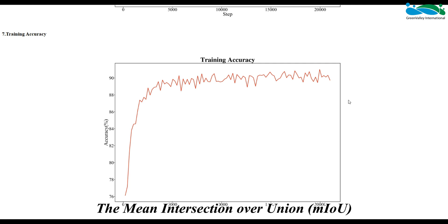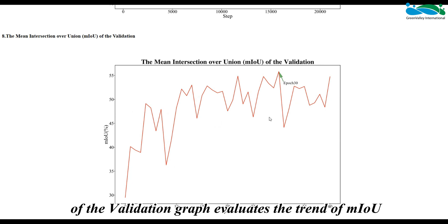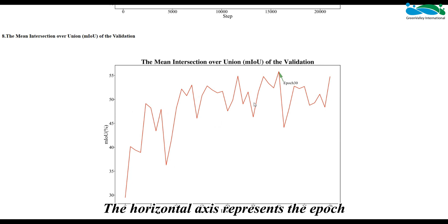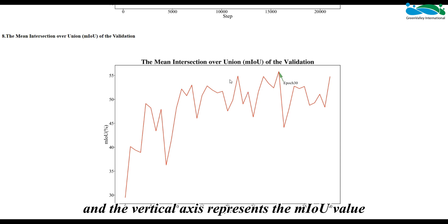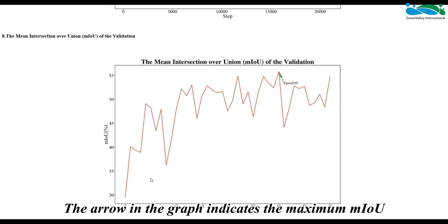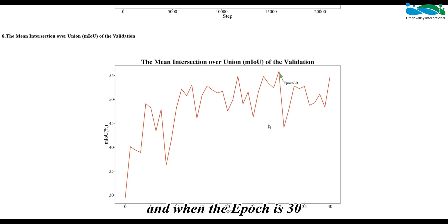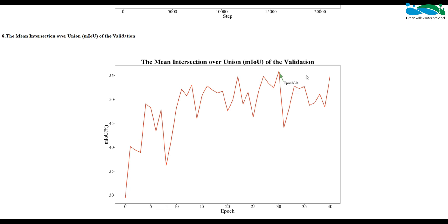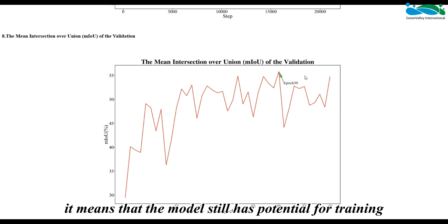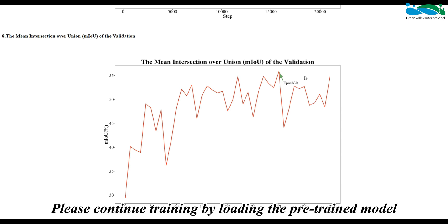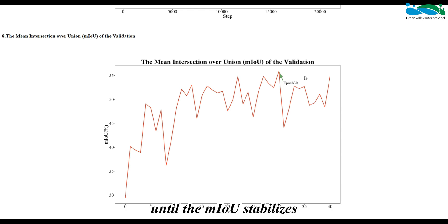The mean Intersection over Union (mIoU) of the validation graph evaluates the trend of mIoU — the horizontal axis represents the epoch and the vertical axis represents the mIoU value. The arrow in the graph indicates the maximum mIoU; when the epoch is 30, the average IoU reaches its maximum value. If the mIoU does not stabilize in the end, it means the model still has potential for training — please continue training by loading the pre-trained model until the mIoU stabilizes.